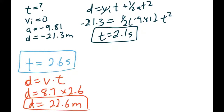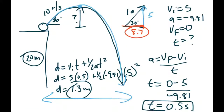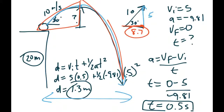With these kinds of questions it's a little more complicated, but always remember to break it into start-to-peak and then peak-to-ground. You get two different parts, and you can add the distances and add the times. The rest of the question works the same way.